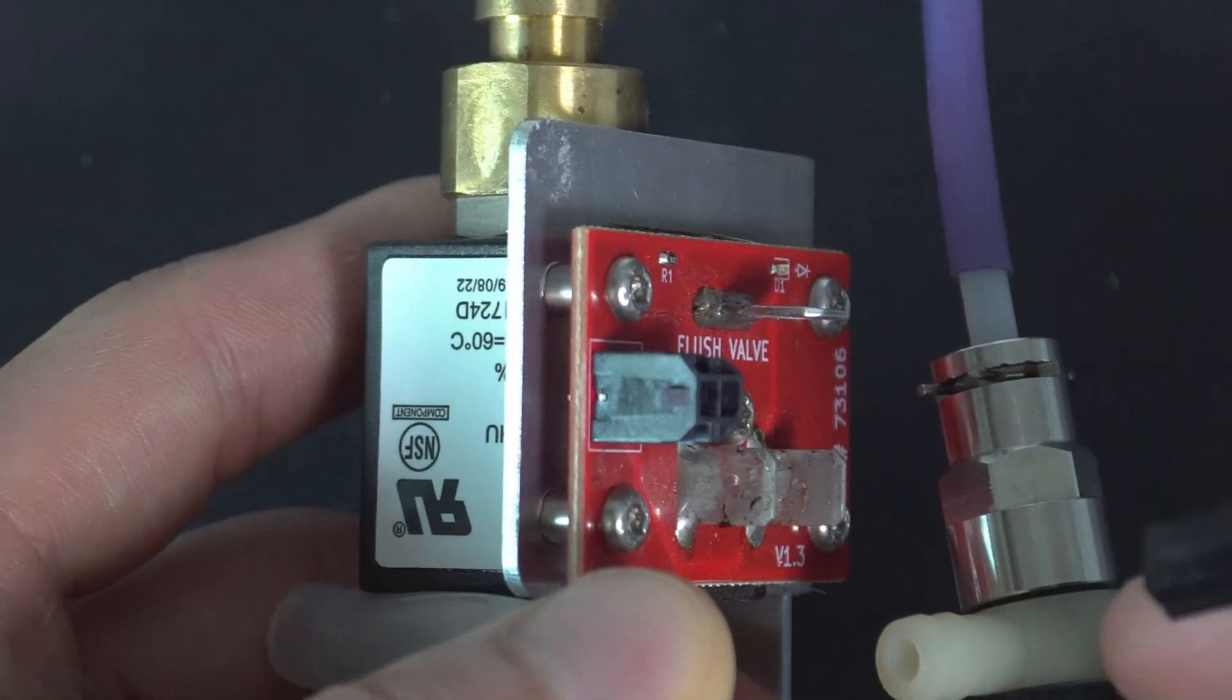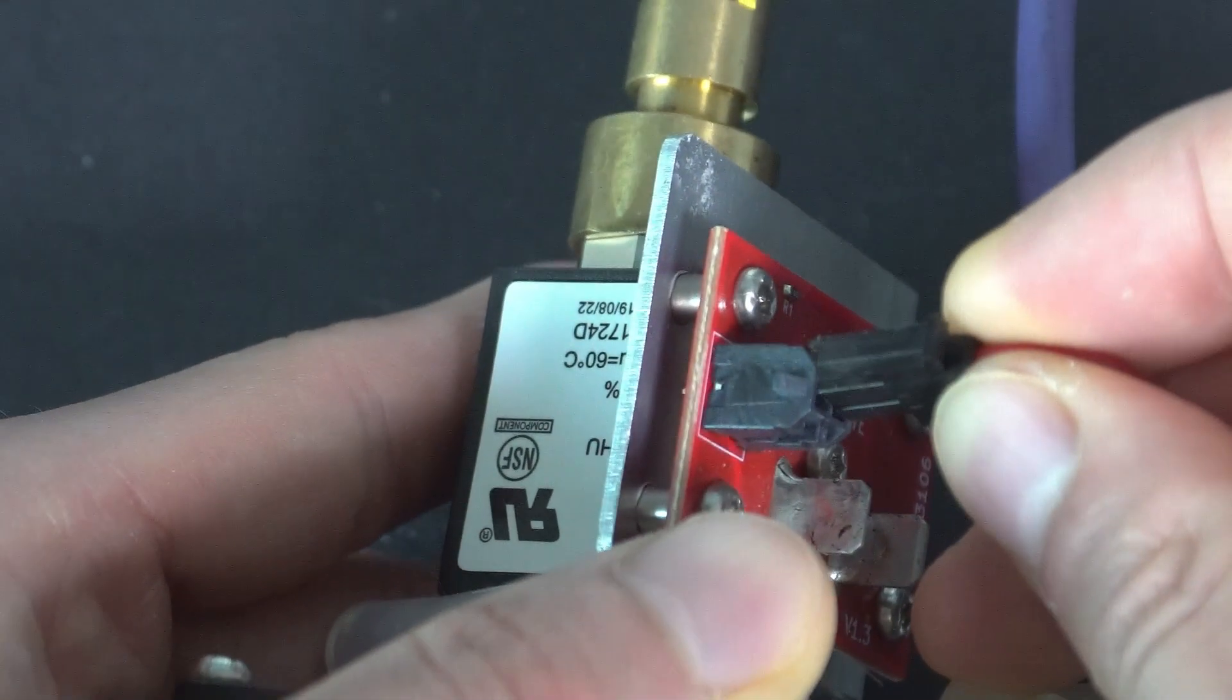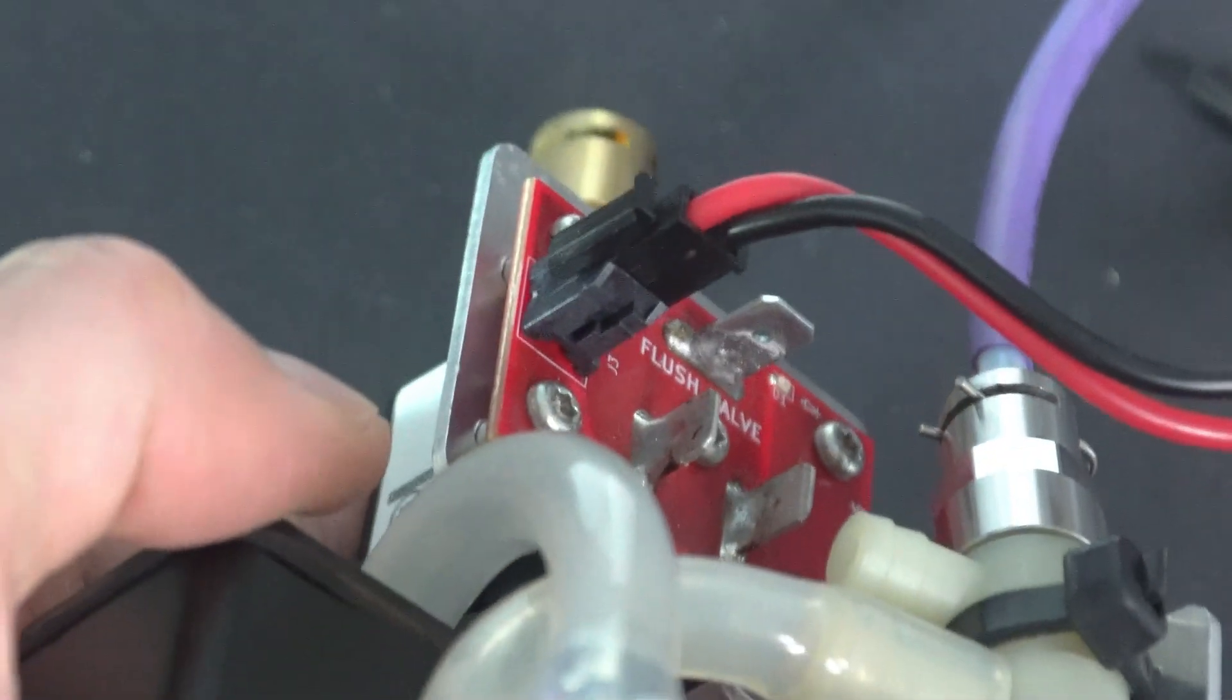Plug the drain valve power cable into the drain valve board. Push the connector in firmly until it clicks or is fully seated.